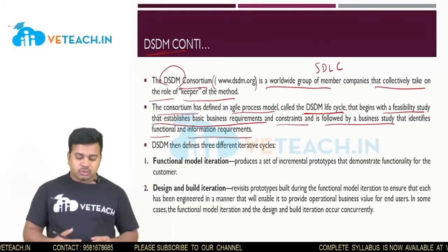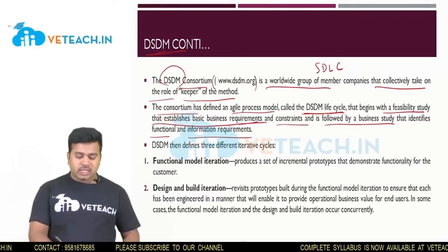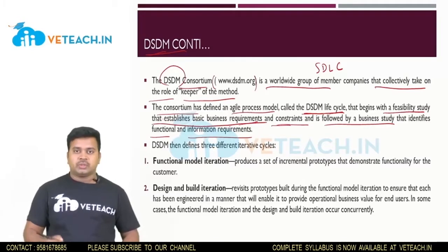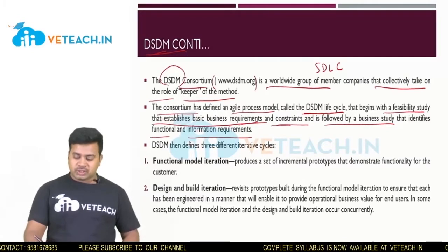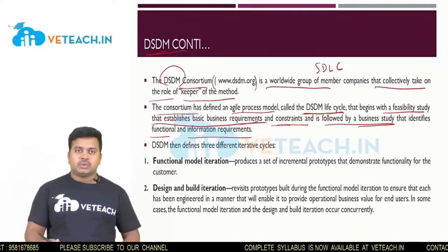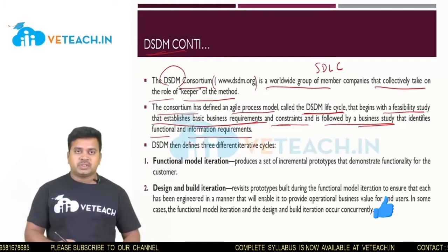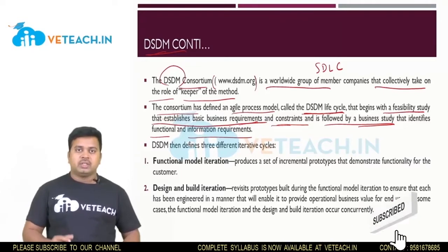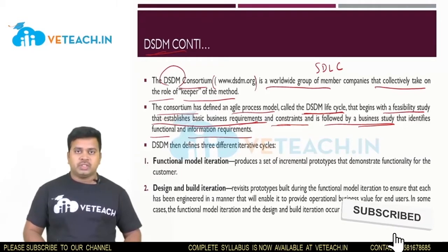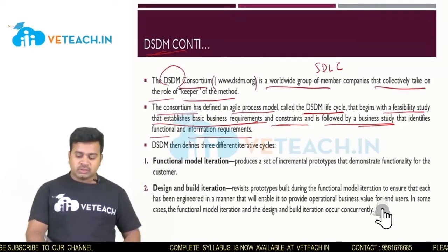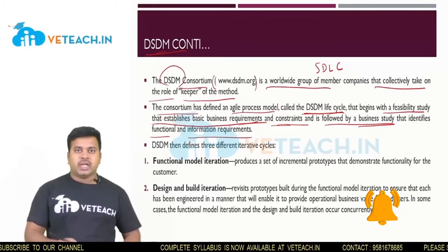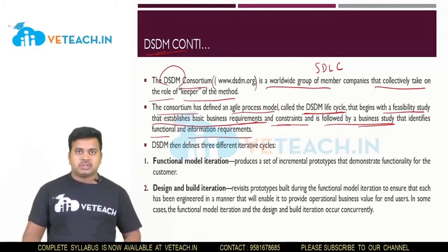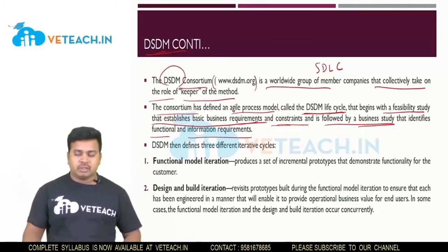You also find out the requirements and constraints, and it is followed by a business track study, where you prepare a business study for that particular product. This is what actually happens in the DSDM life cycle Dynamic Systems Development Method.